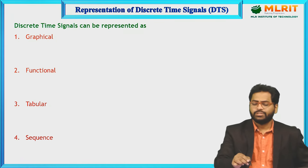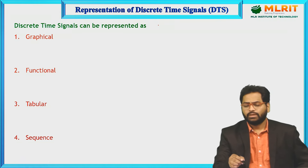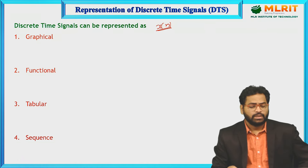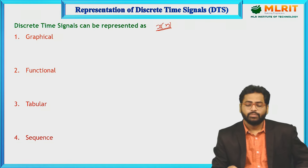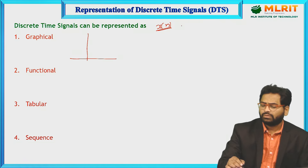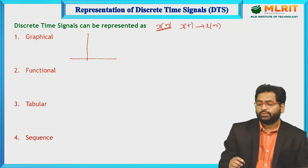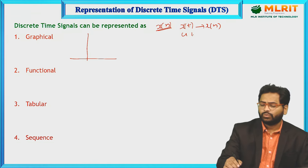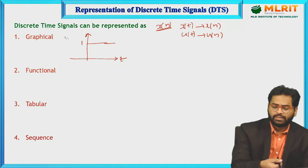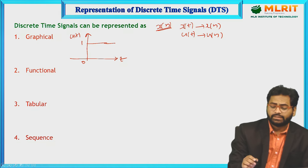Now coming to the discrete time signals. Till now we studied x(t); now I am studying x(n). For the discrete graphical representation, to make you understand, I am first getting from x(t) to x(n) — taking the same example, u(t) to u(n). With sampling interval Ts = 1, nTs becomes simply n.